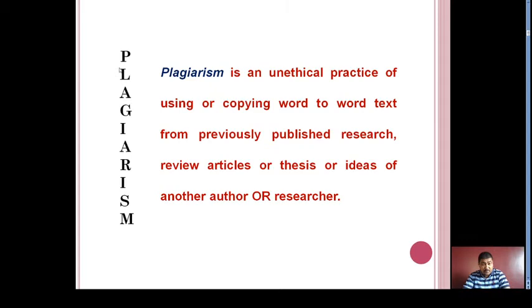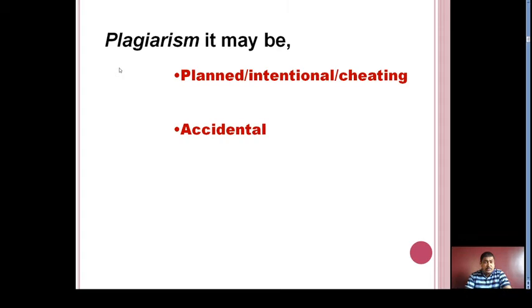Plagiarism is generally categorized into two types: planned or accidental. Planned plagiarism is also called intentional plagiarism or cheating. It is defined as obtaining or attempting to obtain credit for work by any dishonest or deceptive means. It may occur due to submission of work, either in part or in whole, completed by another author or researcher, or due to failure to give credit for ideas, statements, facts, or conclusions that rightfully belong to another person.